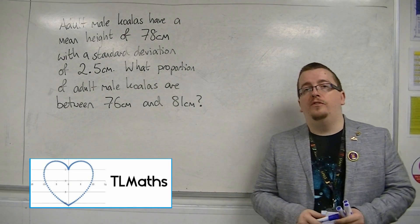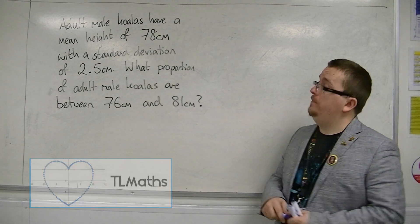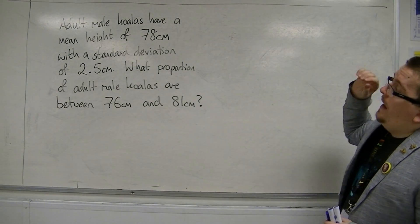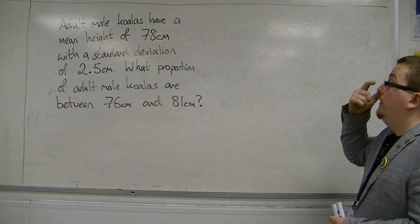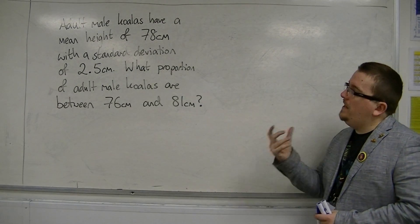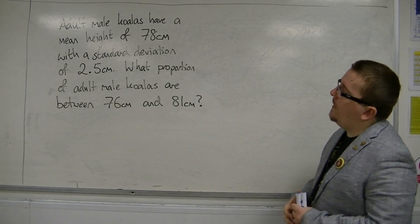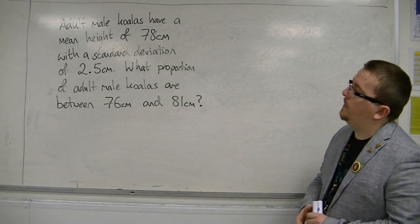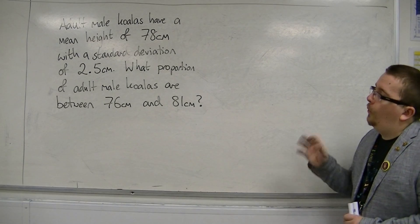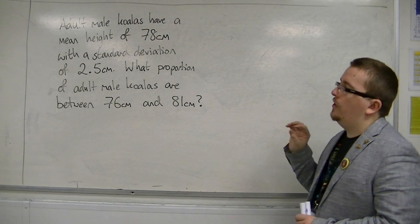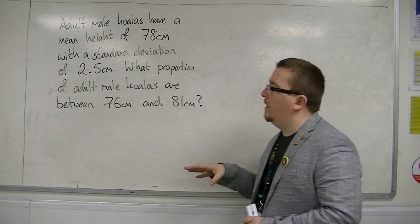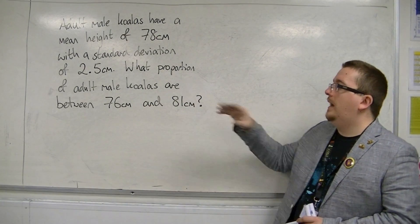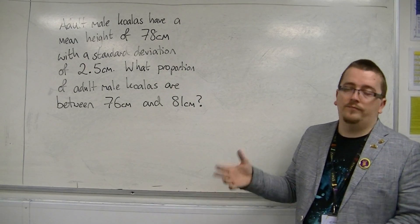Here's another normal distribution question. Adult male koalas have a mean height of 78 centimetres with a standard deviation of 2.5 centimetres. What proportion of adult male koalas are between 76 centimetres and 81 centimetres tall?